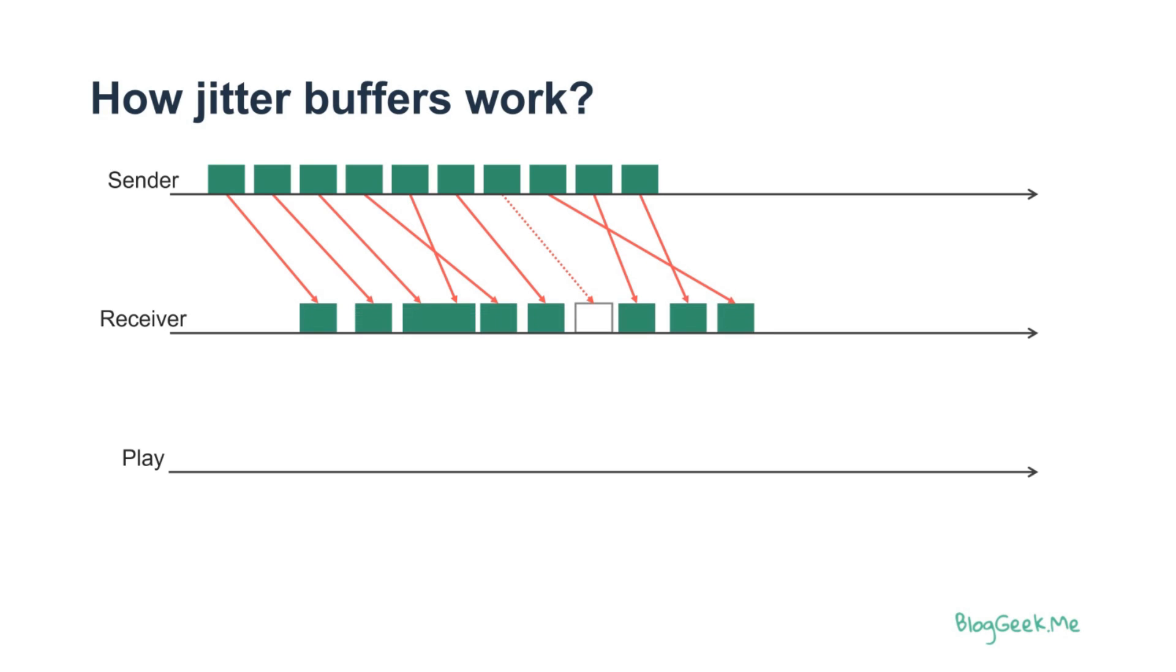The sender sends its messages. They go over the network. Some of them might not get there. That would be the dotted line in there, the red line. And then these packets arrive at different time intervals than they were sent. Some of them get there roughly the same time. Others a bit sooner or a bit later. And some of them might get reordered.